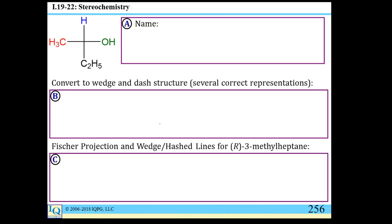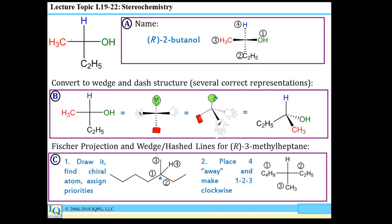The ability to use Fischer projections to assign R and S labels is another important skill. The vertical axis in a Fischer projection indicates groups going away from you, so the hydrogen (fourth priority substituent) is already pointed away. This makes assigning R and S easy: count from priority 1 to 2 to 3 — a clockwise procession gives R configuration, so this is R-2-butanol.